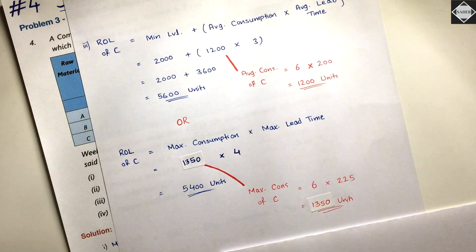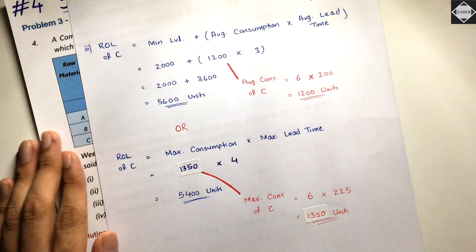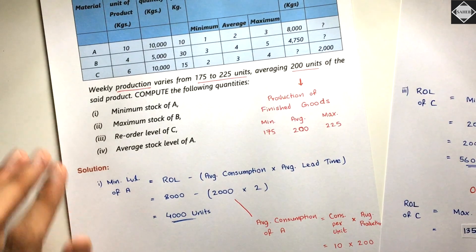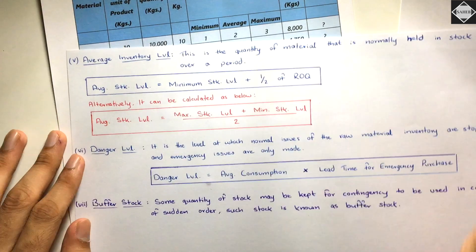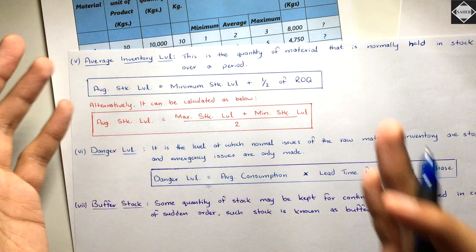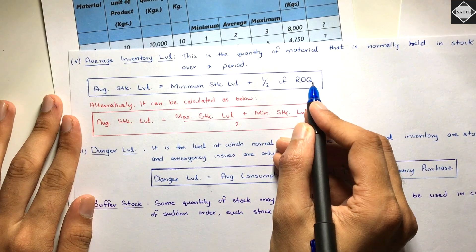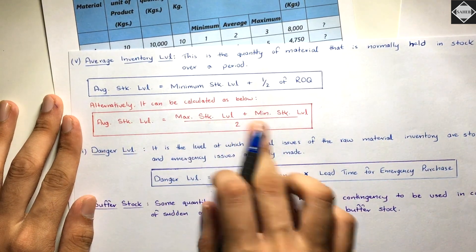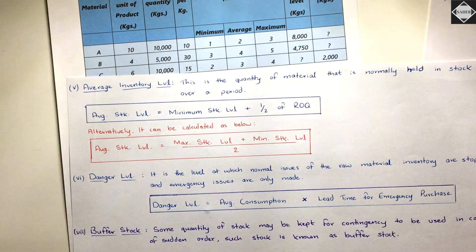We have now seen reorder level of C from both formulas — 5,600 and 5,400 respectively. Both are correct; a slight variation is acceptable. After this, the question asks for average stock level of A. There are two formulas: first, minimum stock level plus half of ROQ (reordering quantity); second, maximum plus minimum divided by two — a simple average formula.